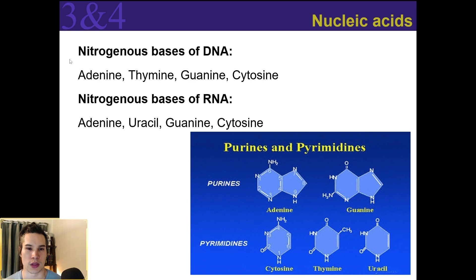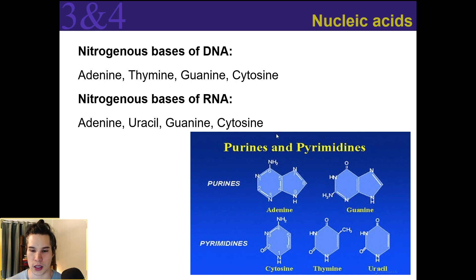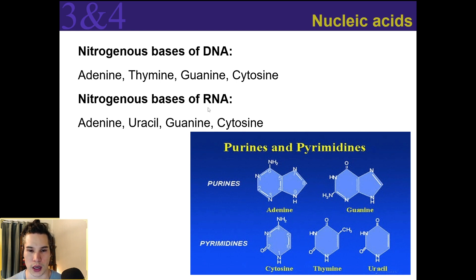We have a few different types of nitrogenous bases. If we're dealing with DNA, we have adenine, thymine, guanine, and cytosine — those are the four letters of the nucleic acid alphabet. Adenine and guanine are both purines, and cytosine and thymine are both pyrimidines. Now if we're dealing with RNA, in place of thymine, RNA actually uses uracil, which is very structurally similar but is in fact different — it's missing a methyl group, so we call it uracil.